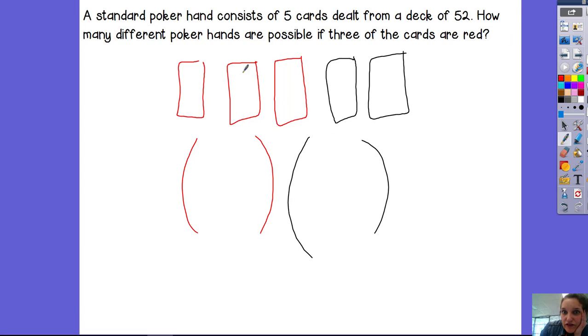So in total I have 26 red cards and I'm going to choose three of them to be in my poker hand. And I have 26 black cards and I'm going to choose two of them to be in my poker hand.